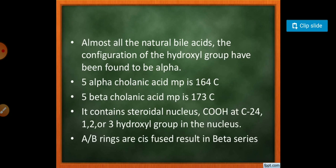Most natural bile acids have the hydroxyl group at the alpha position. The melting point of 5-alpha-cholanic acid is 164 degrees, and 5-beta-cholanic acid melting point is 173 degrees. The bile contains the steroid nucleus with COOH at carbon 24, and 1, 2, or 3 hydroxyl groups present on the nucleus.